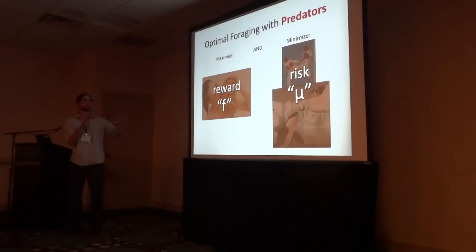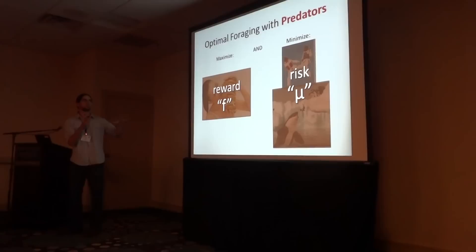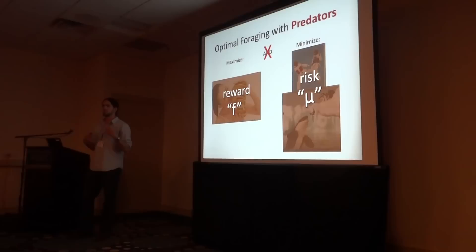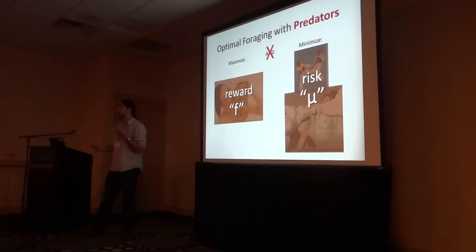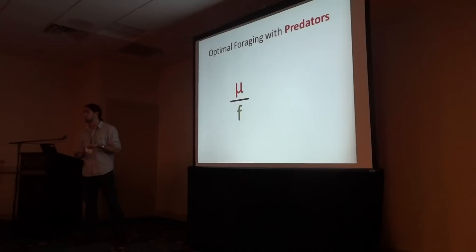In natural systems, consumers can't get their way most of the time because these two demands are at odds. Oftentimes resource availability is correlated with predation risk. So what consumers really have to do is balance risk with reward. A simple way to model this is using the ratio mu over F — risk over reward — and organisms should seek to minimize this in order to maximize fitness.